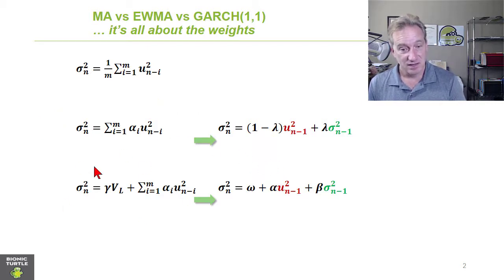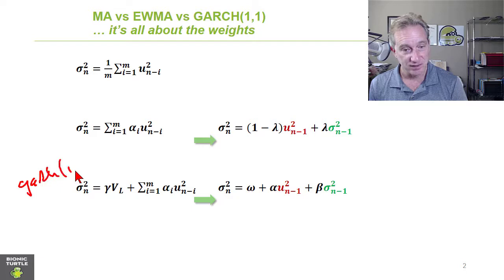And then generalizing, as we said, we generalize by inserting back this term for the long-term variance. We end up with the GARCH 1.1 right here. And the GARCH 1.1 generalizes the exponentially weighted moving average and therefore has similarities.